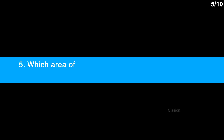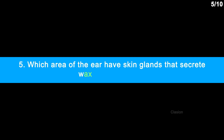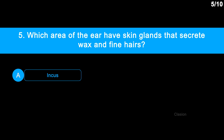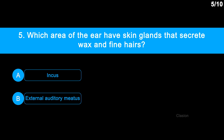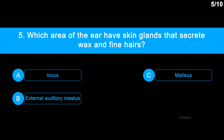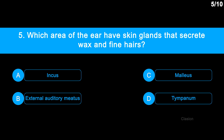Question number 5: Which area of the ear has skin glands that secrete wax and fine hairs? Option A: incus. Option B: external auditory meatus. Option C: malleus. Option D: tympanum.